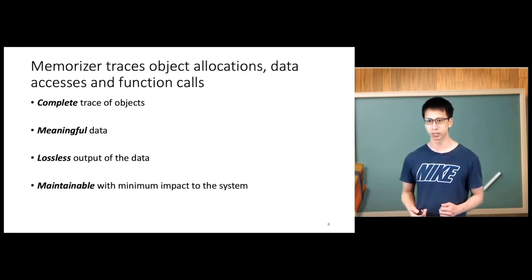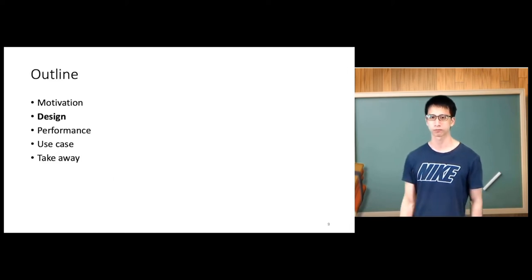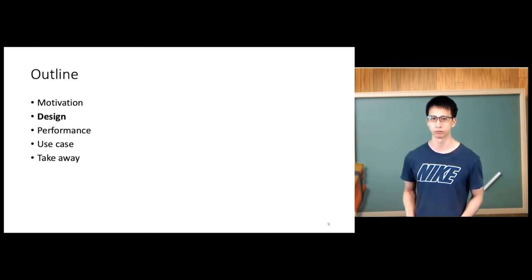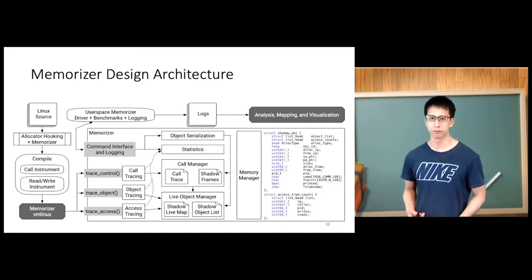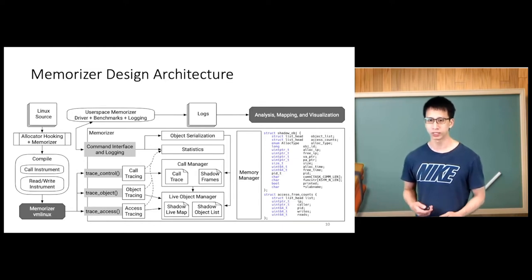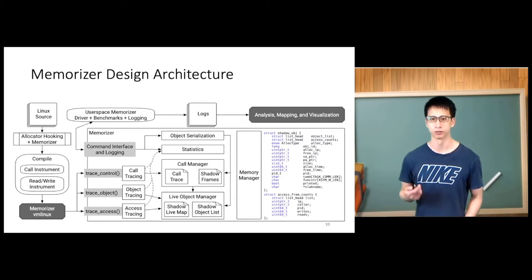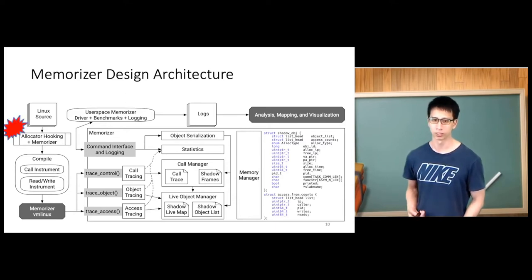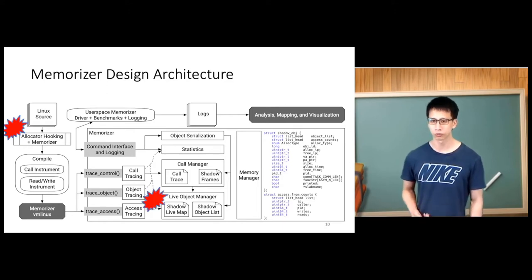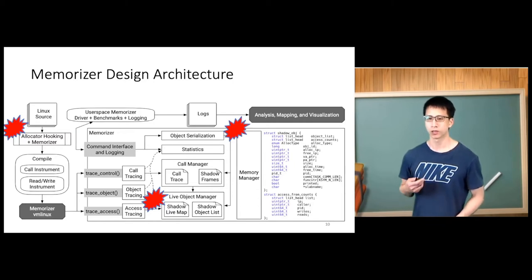Finally, we want the system to be maintainable, meaning we want minimum impact to the system. Now I'd like to go on to the design of Memorizer. First is the Memorizer design architecture. We won't go through every detail of this graph, but we will pick up a few important design choices: how we instrument the Linux kernel, how we store the metadata information, and how we manage the memory of Memorizer.